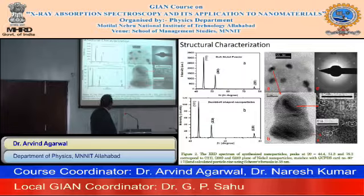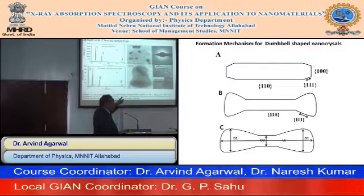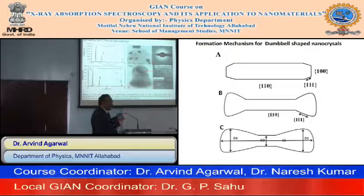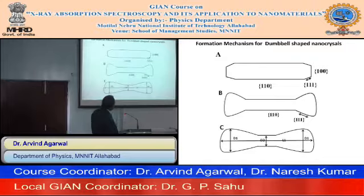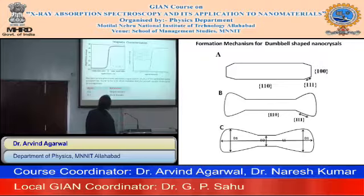Using the Scherrer formula we calculated the size as 38 nanometers. The shape of the particle was dumbbell-shaped — like a dumbbell used in exercise. The middle image B1 is showing the dumbbell shape. Our expectation is that these are showing the (1 0 0), (1 1 1), and (1 1 0) orientations, and the matrix formation is shown in part C — this is our own assumption.